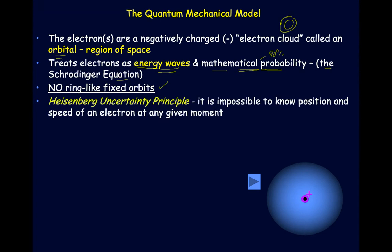We're not going to have ring-like fixed orbits at all. The scientist here was Heisenberg, a German scientist. He came forth and said it's really impossible to know the position and the speed of an electron at any given moment going around the nucleus. This points to the fact that the nucleus is in the middle, and then you have these positions where the electron can be — a probability that it's going to be in a local area, but not necessarily sitting on a ring.